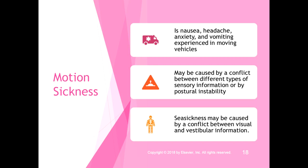Seasickness is caused by a conflict between visual and vestibular information. Often your vestibular system registers that you're moving, while your visual system perceives something fixed — and that mismatch leads to nausea. Some people are extremely sensitive to this conflict while others are not affected at all. That mismatch between vestibular and visual information is what causes motion sickness.